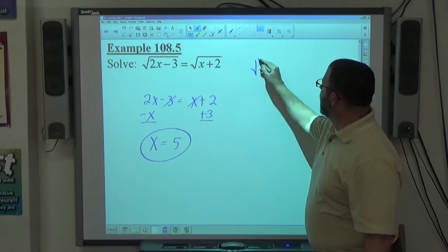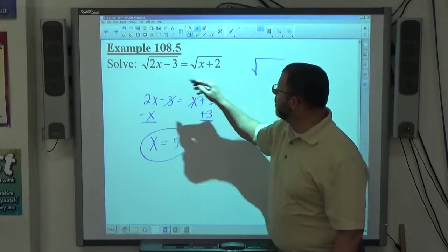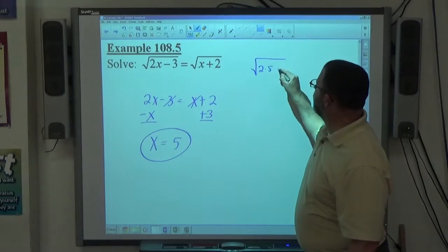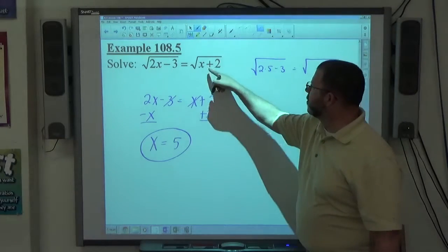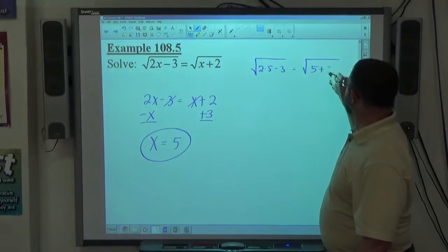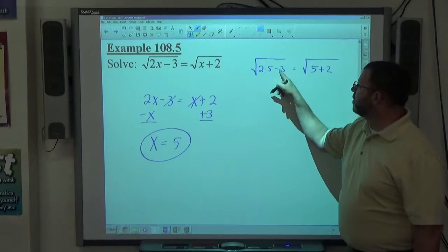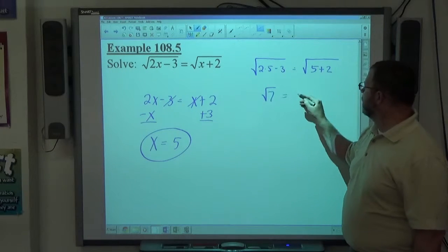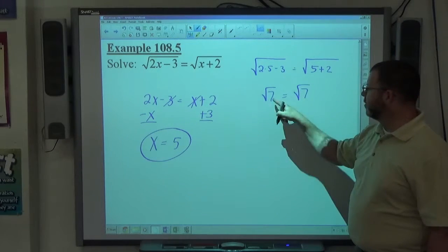So if I put x back into this problem, 2 times x is going to be 2 times 5 minus 3 equals the square root of x plus 2, which is 5 plus 2. 2 times 5 is 10 minus 3 is 7. 5 plus 2 is 7. 7 equals 7. It's true.